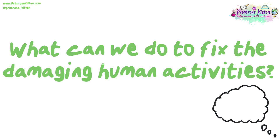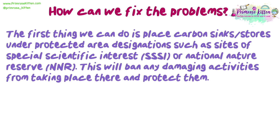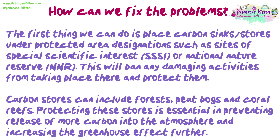What can we do to fix the damage from human activities? The first thing we can do is place carbon sinks or stores under protected area designations, such as sites of special scientific interest or national nature reserves. This will ban any damaging activities from taking place there and protect them. Carbon stores can include forests, peat bogs, and coral reefs. Protecting these stores is essential in preventing the release of more carbon into the atmosphere and increasing the greenhouse effect further.